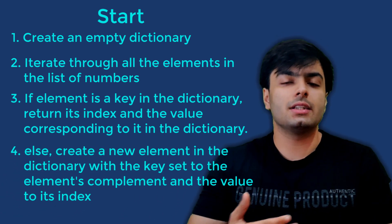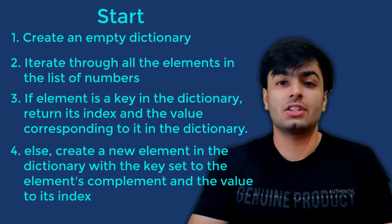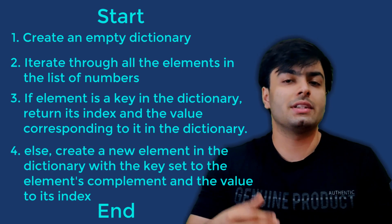Or else, we create an element in the dictionary with the key set to the complement of the number and the value set to its index number. Now that we have everything we need, let's start coding.